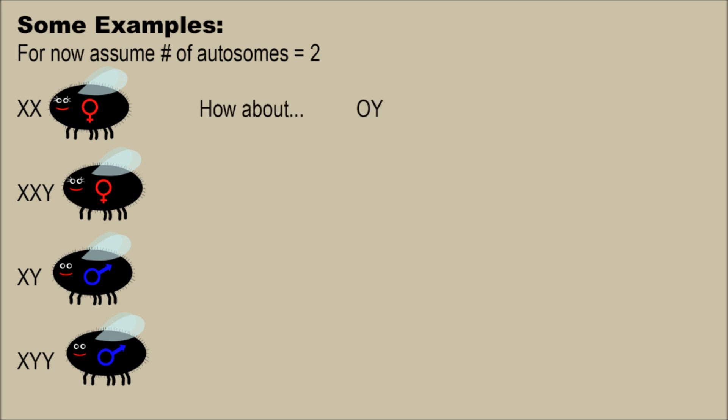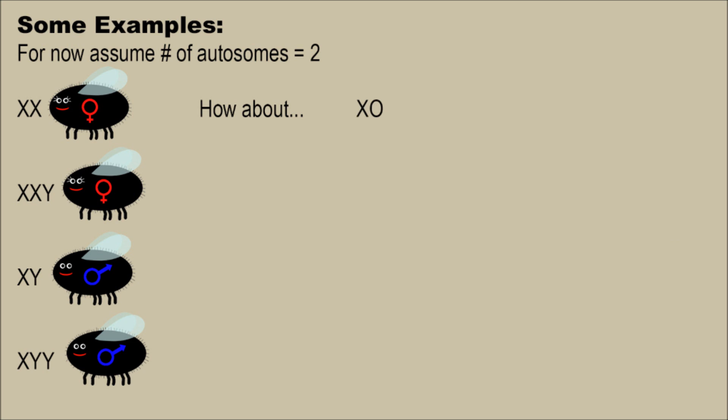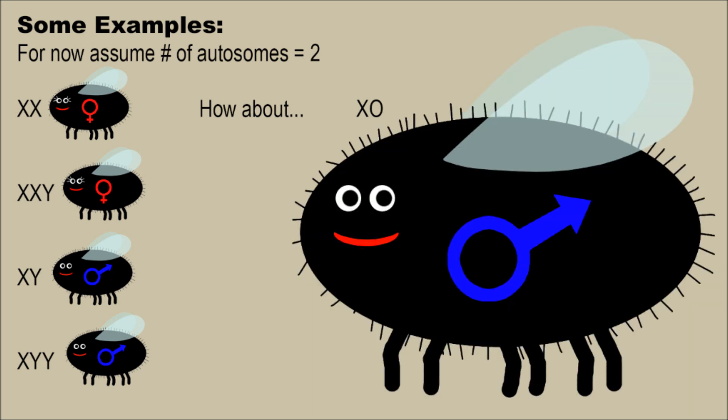How about OY? The X is actually important — it encodes genes which both males and females need in order to survive. This embryo is dead. How about XO? We've got the important part — there's an X chromosome — so we have a male, except he's infertile, and so he's sad.